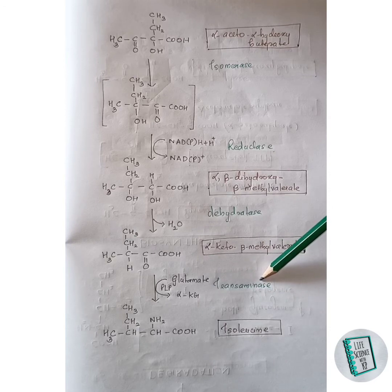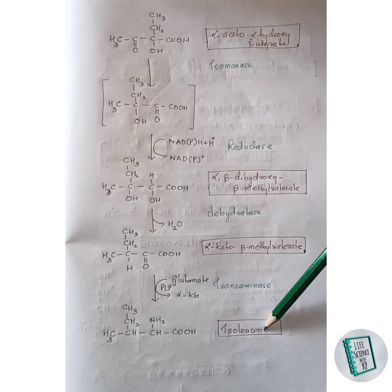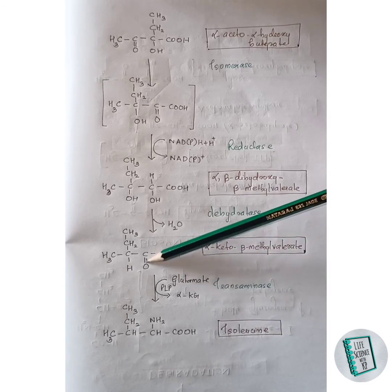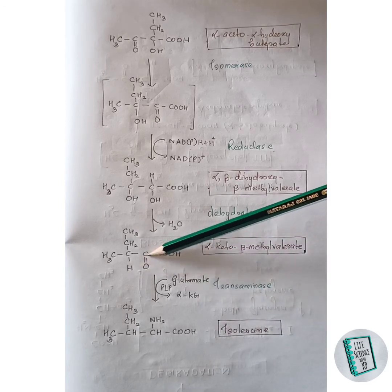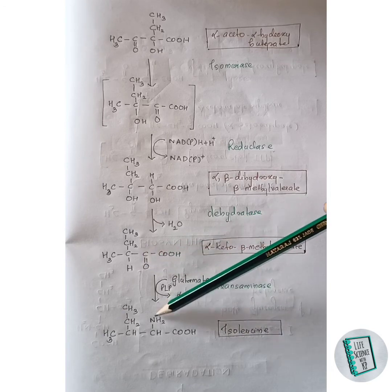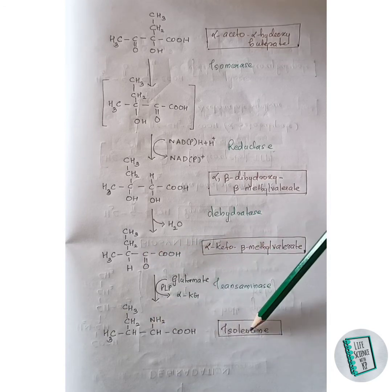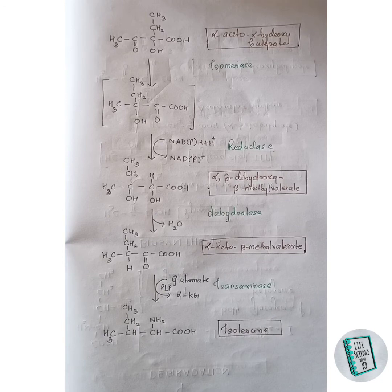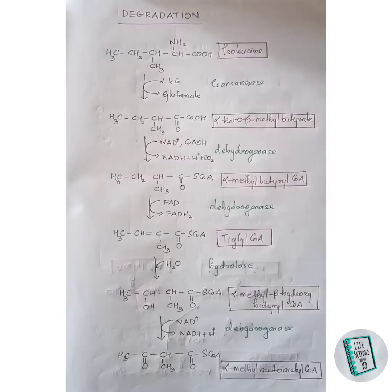Alpha-keto-beta-methyl valerate then undergoes transamination in the presence of transaminase enzyme to form isoleucine. The keto group gets replaced with an amino group, and isoleucine is formed. This completes the synthesis of isoleucine. Now let us move on to the degradation of isoleucine.